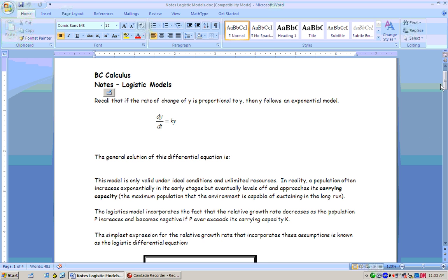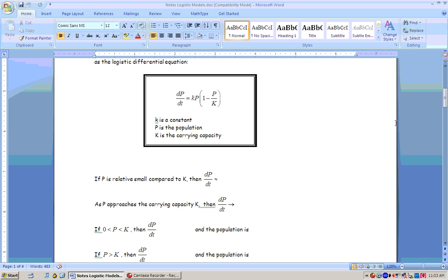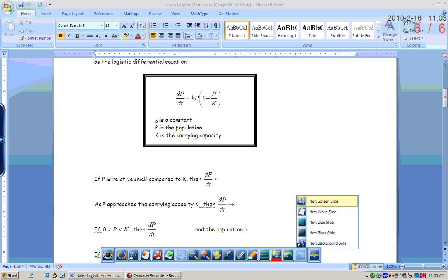The logistic differential equation looks like this. k is your constant, some constant of proportionality. Capital P is the population, and capital K is the carrying capacity. I don't like the fact that your book uses two Ks, but they do, and so I used it here.